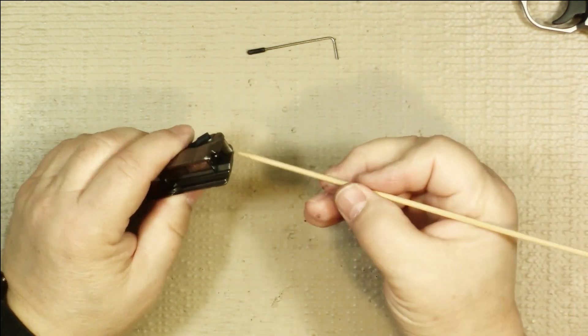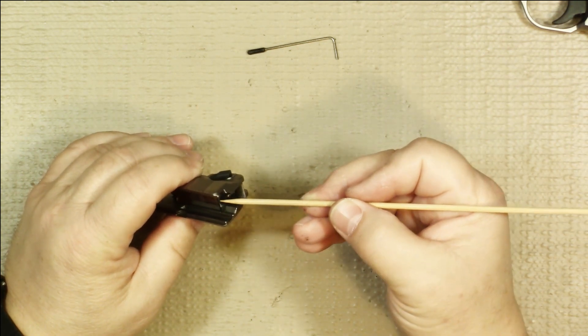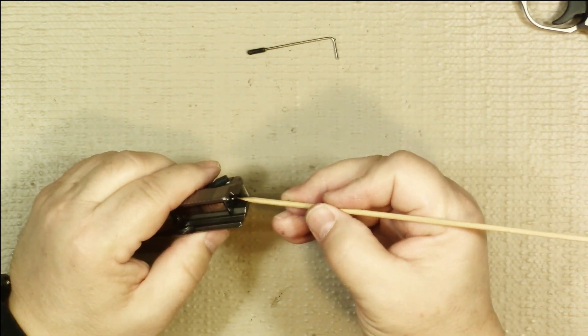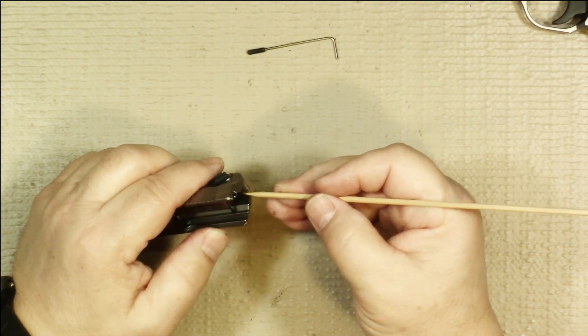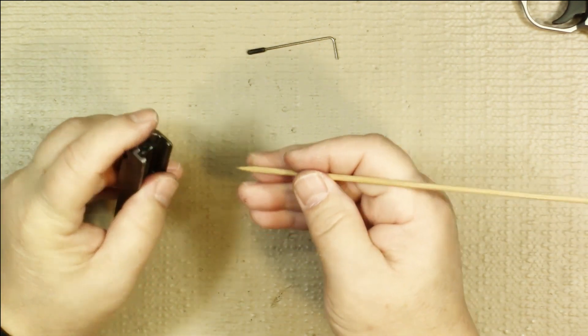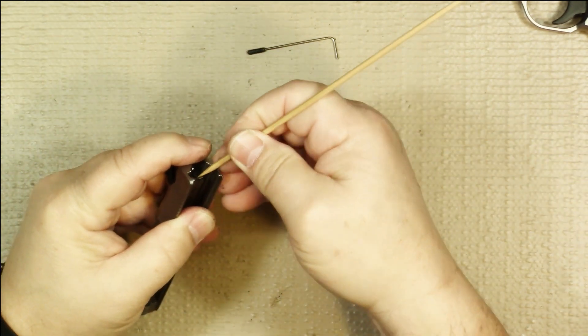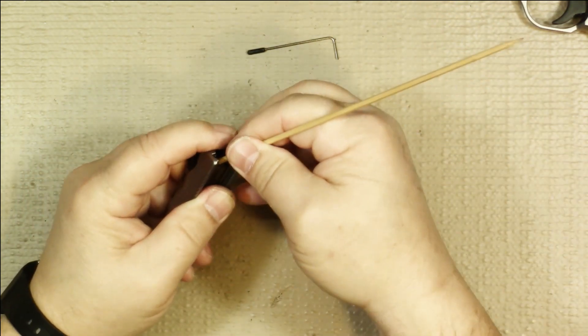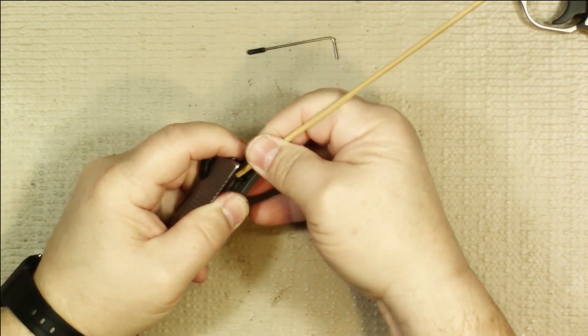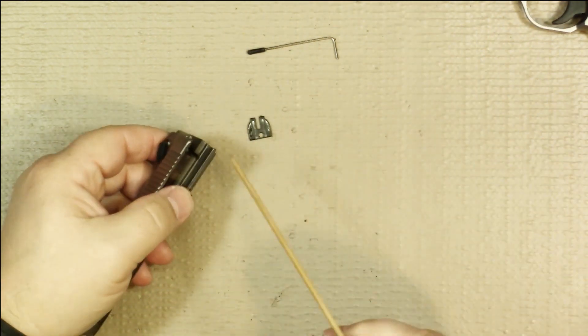So at this point, you can just slide this down. Now there is a little spring in there, a rebound spring on the firing pin. So when you go to slide this down, that might try to pop out. So you just might want to put your finger over it. And then you can just reach in there with something. And slide that out. And then that comes off. And then there's our firing pin.